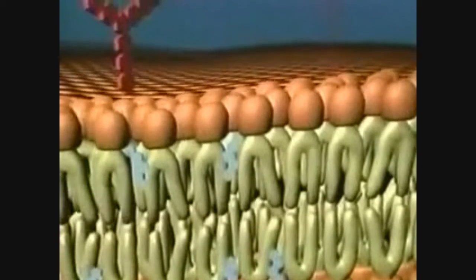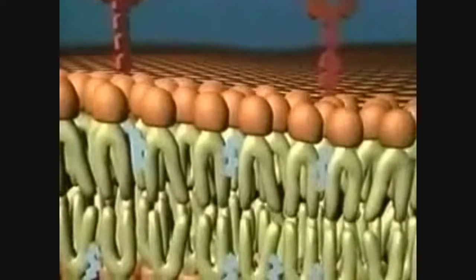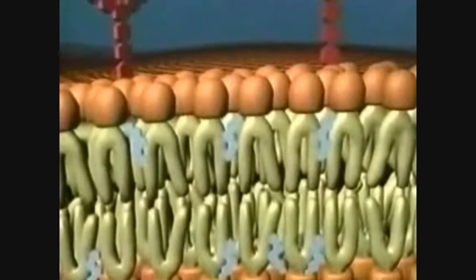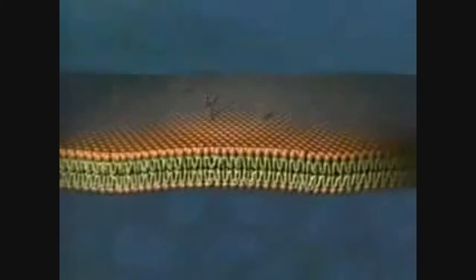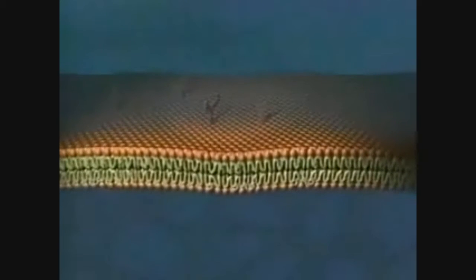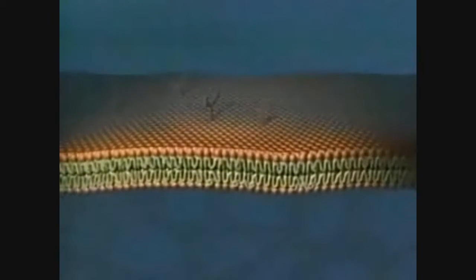There are also some cholesterol and carbohydrates in the plasma membrane. There are proteins as well, which receive signals and transport nutrients and waste.